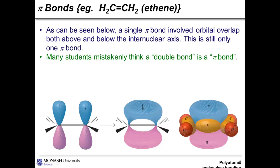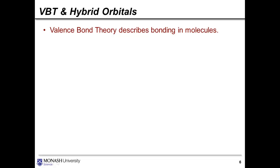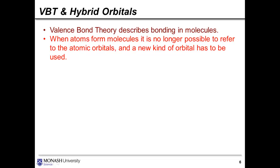Many students mistakenly think a double bond is a pi bond. As you can see below, the double bond in ethene is one sigma bond and one pi bond. So don't make that point of confusion. And this, of course, is all part of valence bond theory, which describes bonding in molecules.